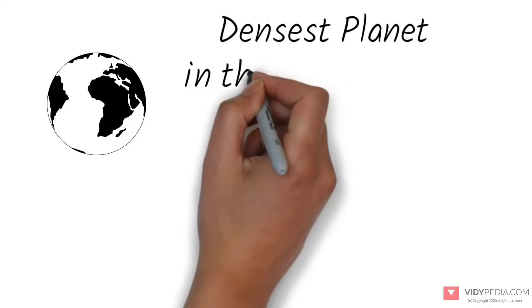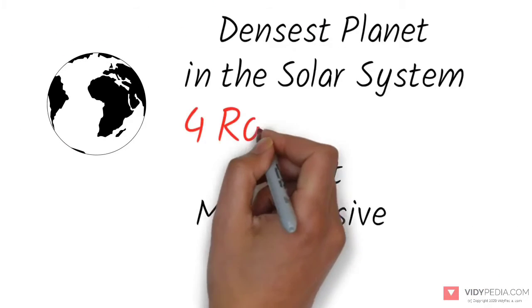Earth is the densest planet in the solar system, and the largest and most massive of the four rocky planets.